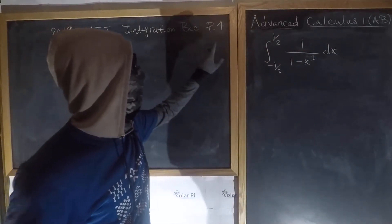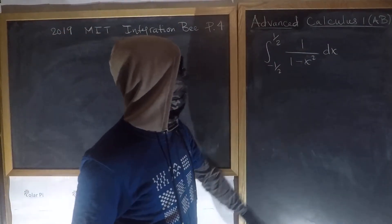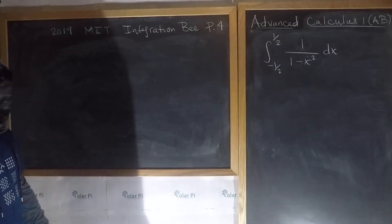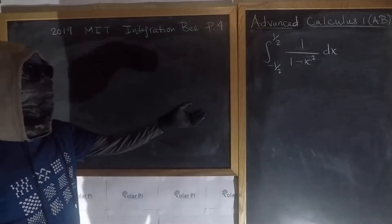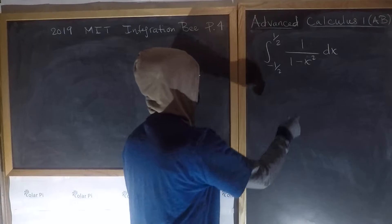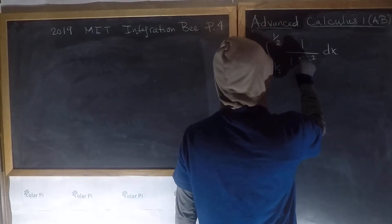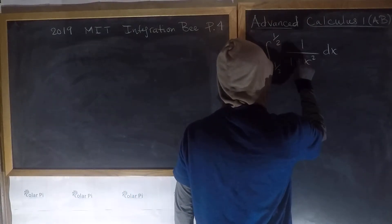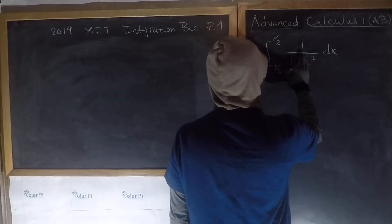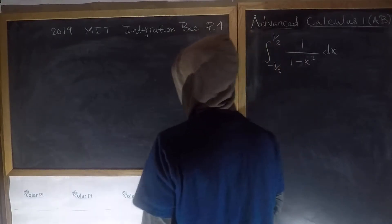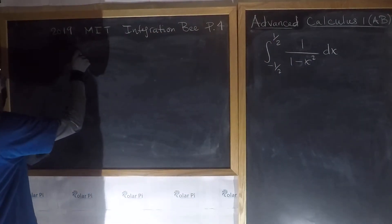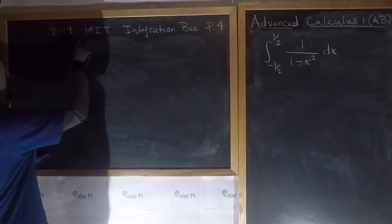Here's the fourth problem. As soon as you see it, you should recognize that this is partial fraction decomposition. If this minus were a plus, we'd know it's arctan, but it's not a plus — it's a minus. So we proceed with partial fraction decomposition.